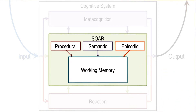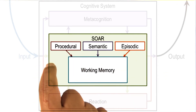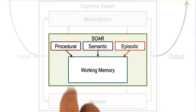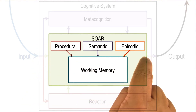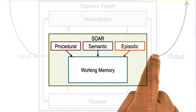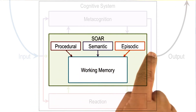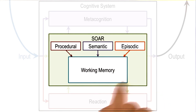At the highest level, SOAR consists of a long-term memory and a working memory. The long-term memory itself contains different kinds of knowledge. In particular, SOAR talks about three kinds of knowledge: procedural, semantic, and episodic.